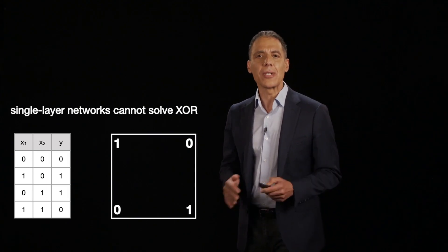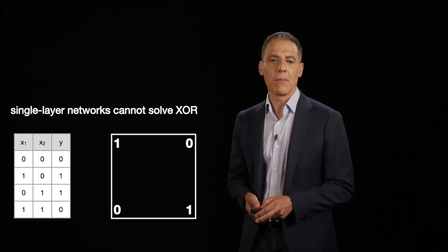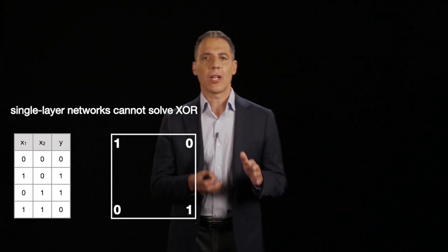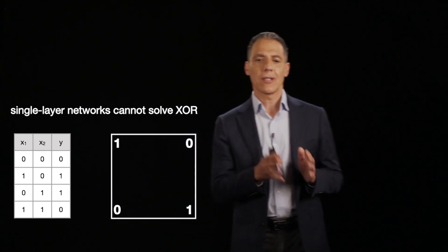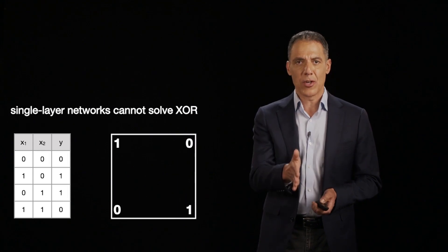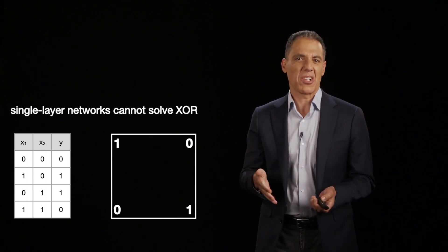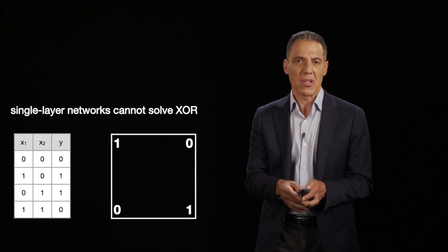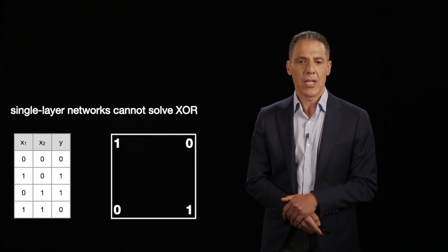Let's now see how to apply these neural calculations to solving a problem, for example. We're going to try to solve a really simple problem with what we call a single-layer network, just one set of neurons — really just a linear model, nothing more complicated.